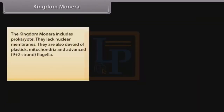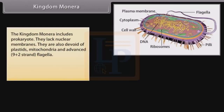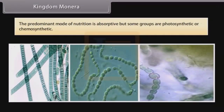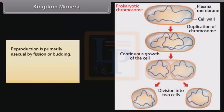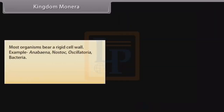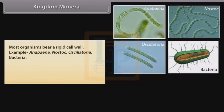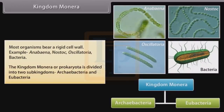Kingdom Monera includes prokaryotes. They lack nuclear membranes and are devoid of plastids, mitochondria, and advanced 9+2 strand flagella. Monera cells are microscopic and typically unicellular. The predominant mode of nutrition is absorptive, though some groups are photosynthetic or chemosynthetic. Reproduction is primarily asexual by fission or budding; protosexual phenomena also occur. Most bear a rigid cell wall. Examples include Anabaena, Nostoc, Oscillatoria, and bacteria. Kingdom Monera is divided into two sub-kingdoms: Archaebacteria and Eubacteria.